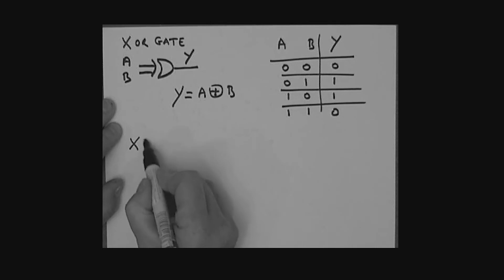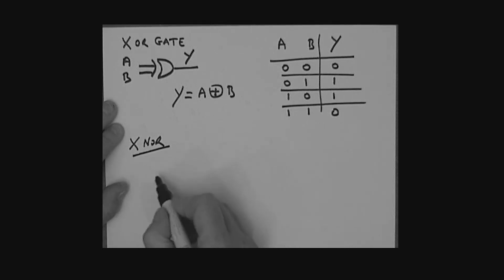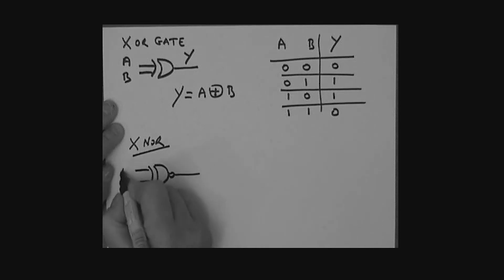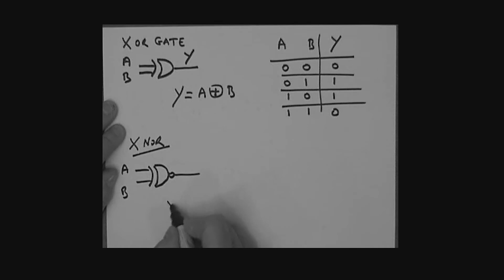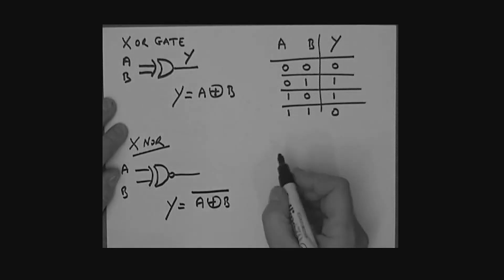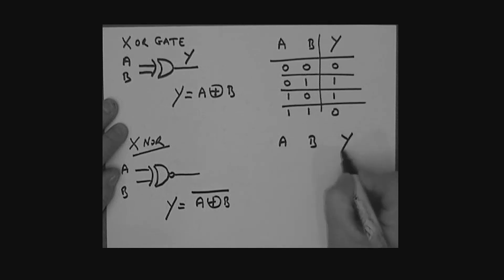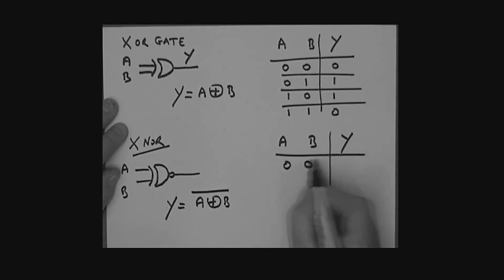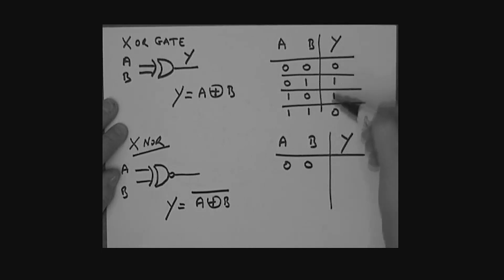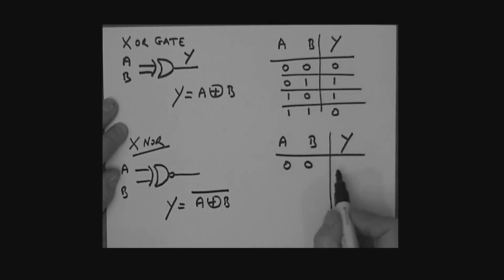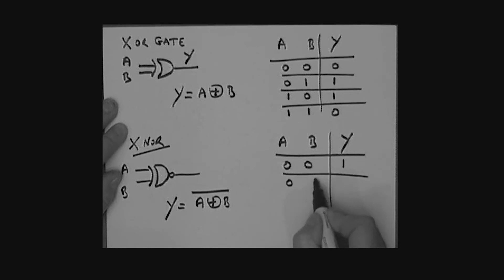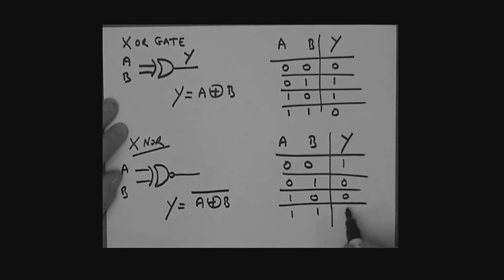One more gate — the exclusive NOR, or XNOR. The symbol looks like an XOR gate with a bubble on it. Inputs A and B, output Y equals A XNOR B — the XOR with a bar above it. Truth table — it's the inversion of the XOR: 0,0 → 1; 0,1 → 0; 1,0 → 0; 1,1 → 1. There's our exclusive NOR gate.